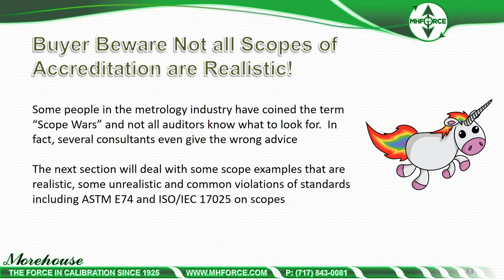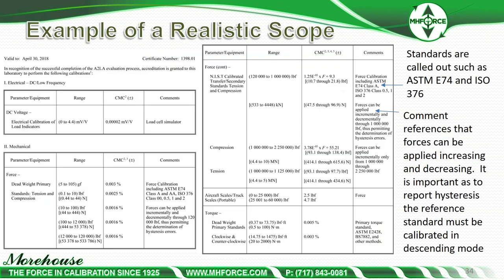Buyer beware: not all scopes of accreditation are realistic — some are like unicorns. Some people in the metrology industry have coined the term 'scope wars.' Not all auditors know what to look for, and several consultants even give wrong advice. The next section will deal with some scope examples that are realistic, some unrealistic, and common violations of standards including ASTM E74 and ISO 17025.